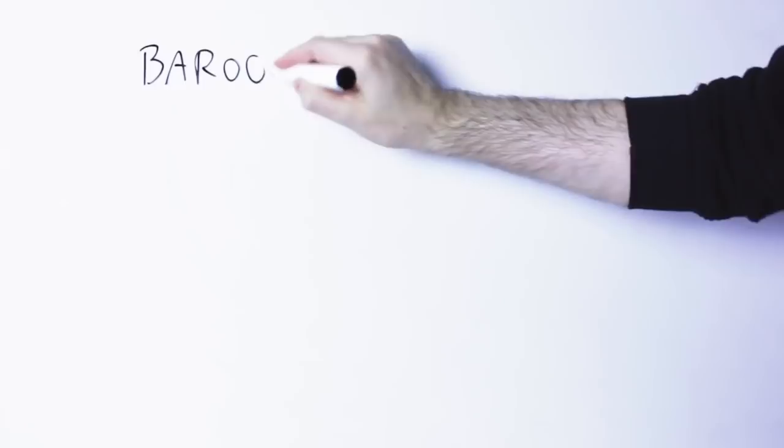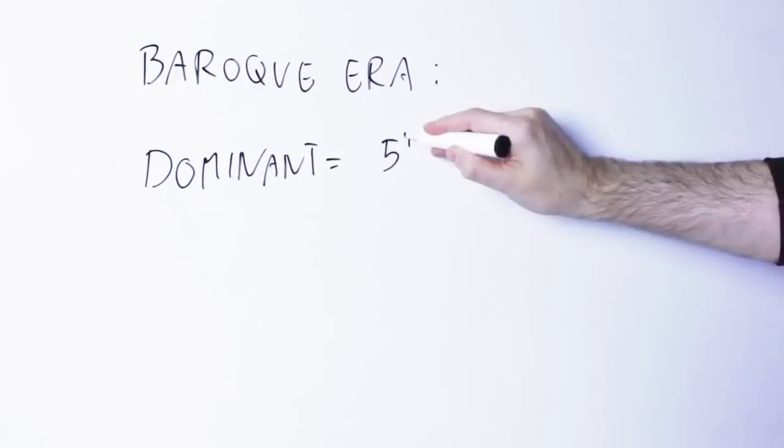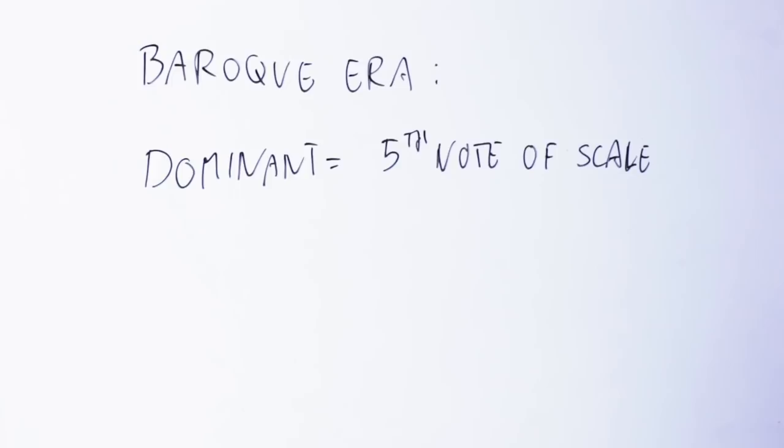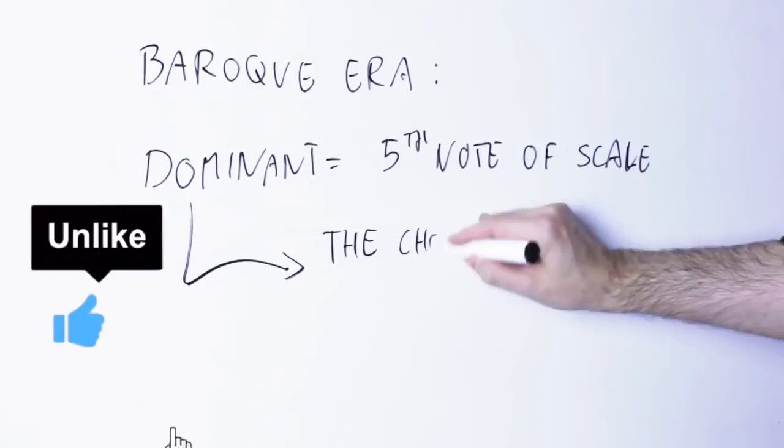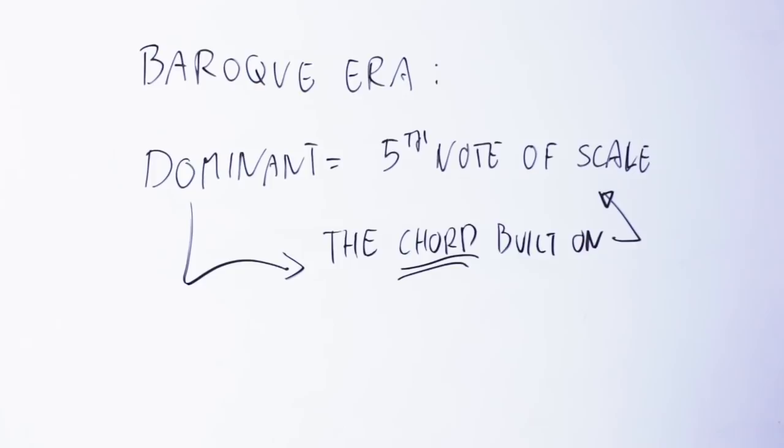But let's say that eventually, around the Baroque era, the name dominant came to indicate the fifth note of the scale. With the invention or discovery of chords, depending on your philosophical outlook, by Jean-Philippe Rameau, the term dominant came to signify not just the fifth note of the key but also and especially the chord built on that note, the fifth chord of the key.